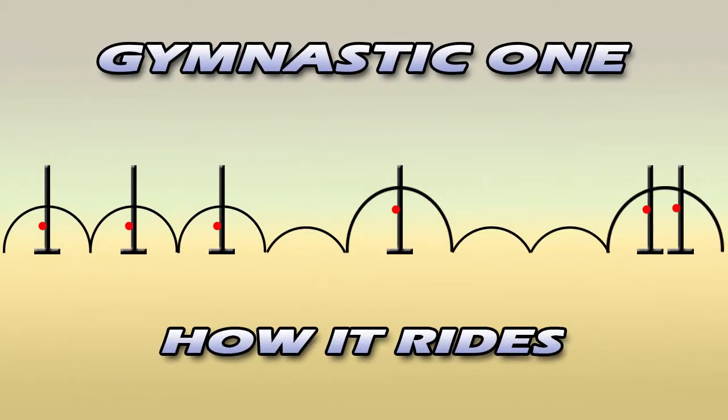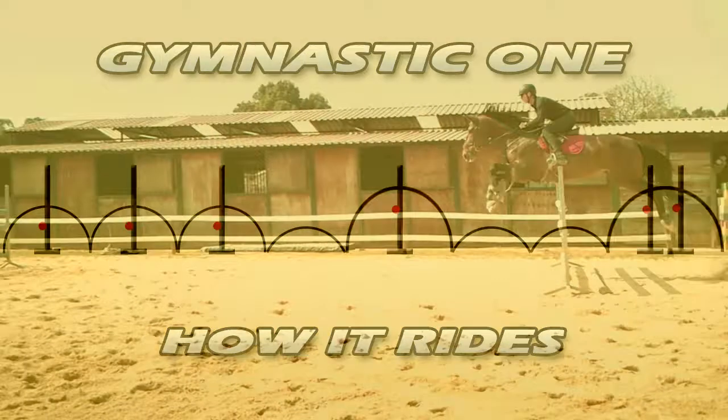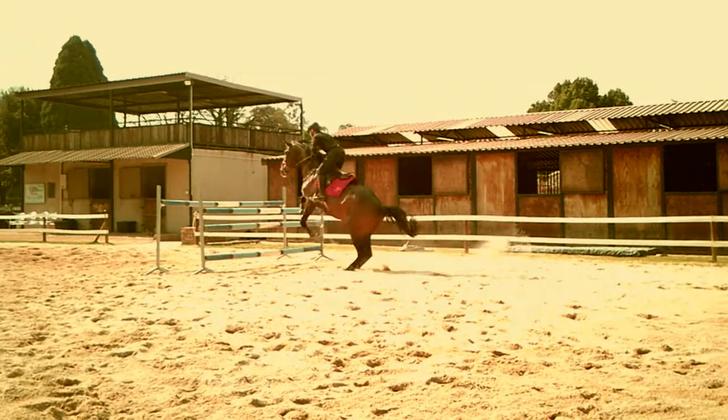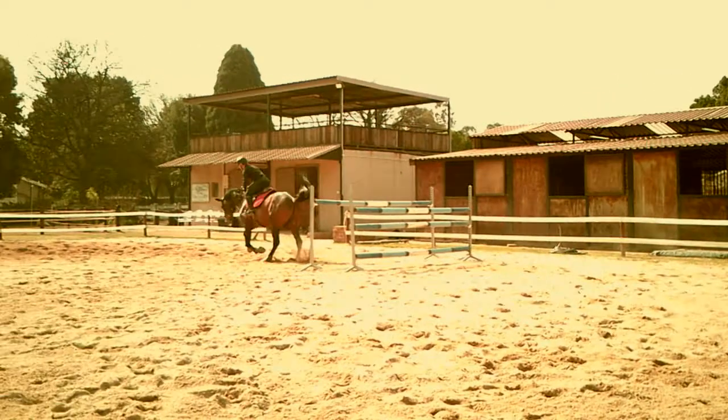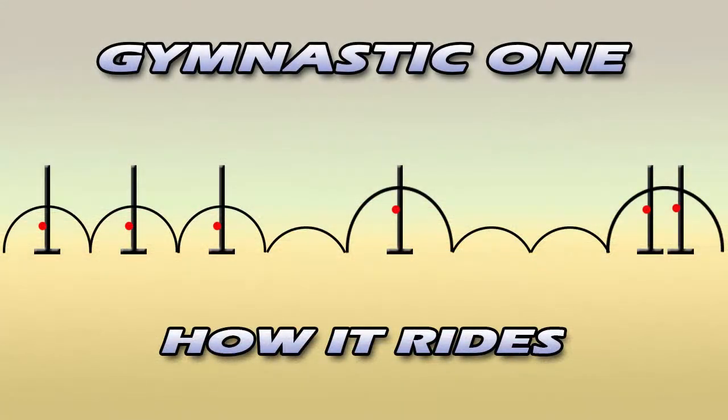Then two short strides to an oxer. This is the power part of the gymnastic. You should get quite close to the oxer, so your horse will have to push quite hard to clear it. Make sure you don't go too big at this point. You absolutely don't want to give your horse a scare. That's really not the point of this at all.